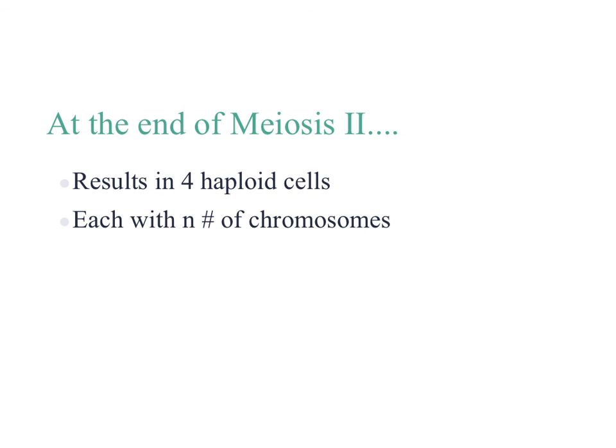At the end of meiosis 2, there are four haploid cells — those are our four daughter cells. Haploid just means it has half the number of chromosomes as you had when you started. In generic terms, haploid means you have N number of chromosomes. For humans, that would be 23.